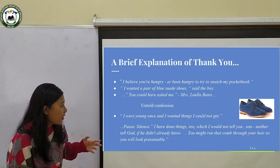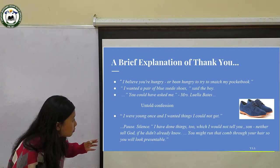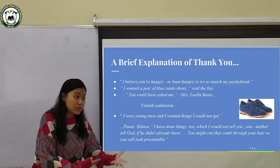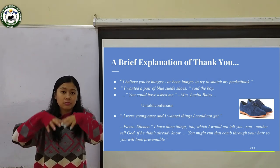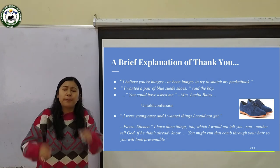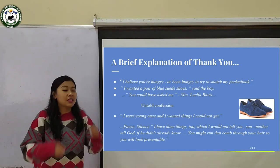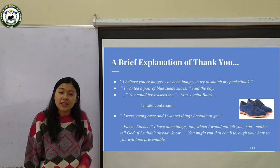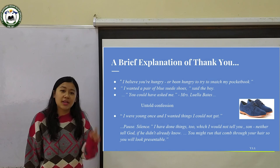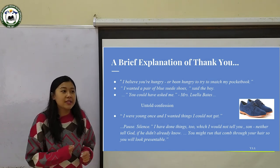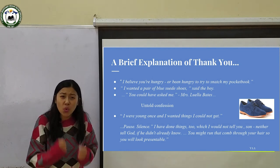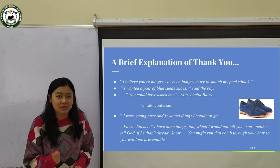She says, 'You might run that comb through your hair so you will look presentable.' She tells the boy she will go and set the table for food while he combs his hair. The boy is flabbergasted — in utter shock. He understands at that point that everyone on earth makes mistakes, and every time punishment, torture, bitterness, and scolding is not the solution.